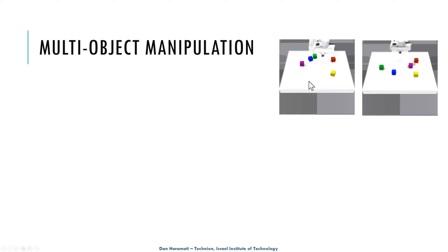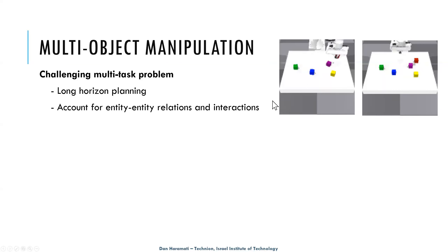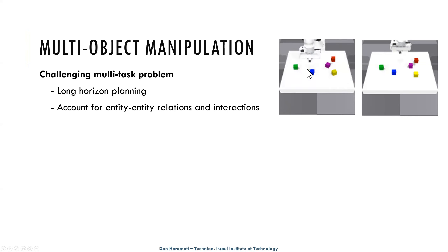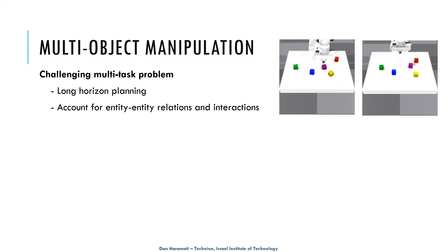Our paper deals with the task of multi-object manipulation. This is a challenging multitask problem requiring long-horizon planning while accounting for the relationships and interactions between entities in the environment. Examples include robotic tabletop manipulation where a robotic arm needs to push cubes to a goal configuration, as well as kitchen environments, warehouse arrangement, or autonomous vehicles navigating multiple entities.